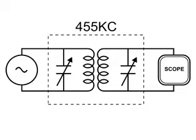Here's the setup. I have taken one of my stock IF cans and I've hooked a signal generator to the left-hand side, and I have put my oscilloscope on the right-hand side.